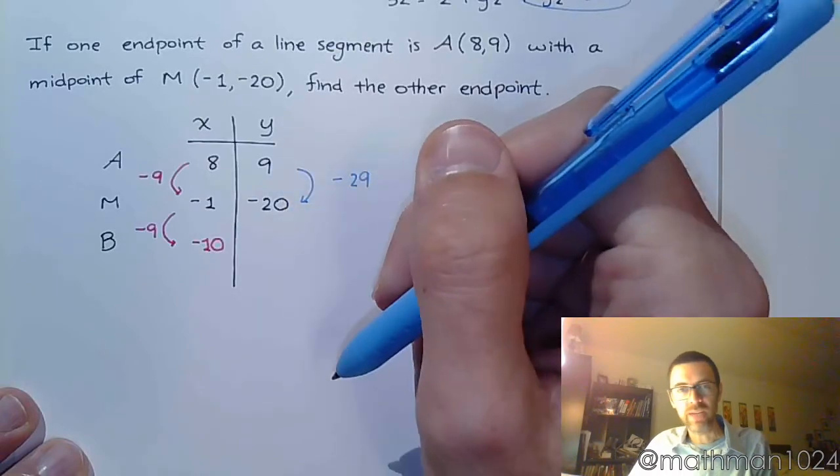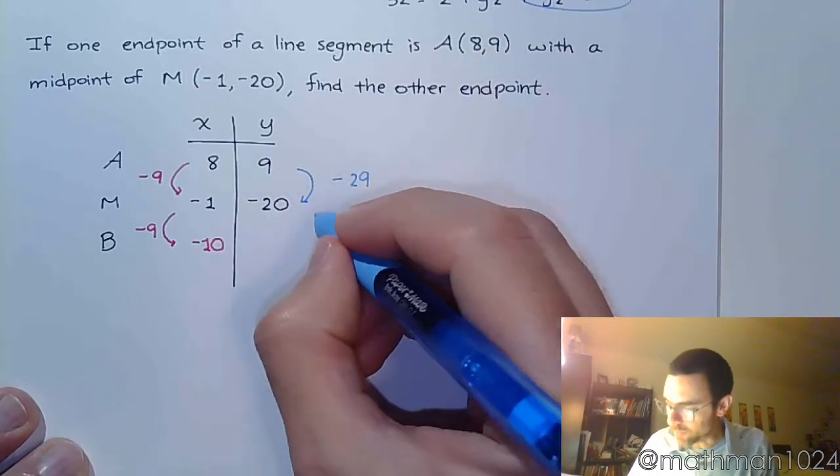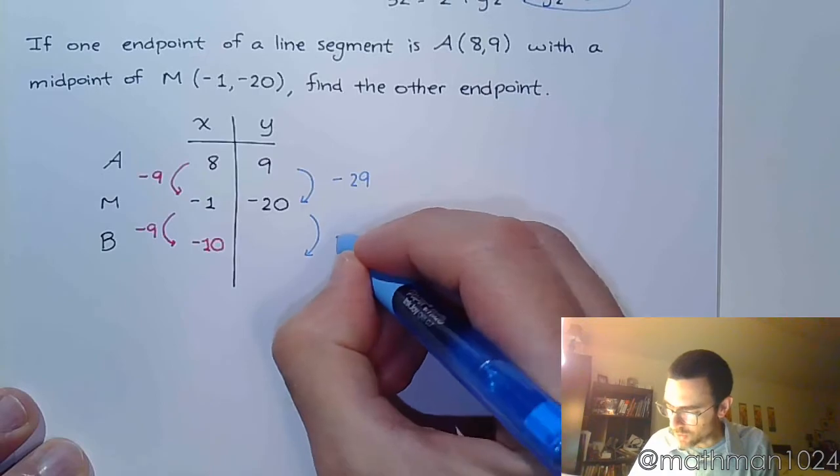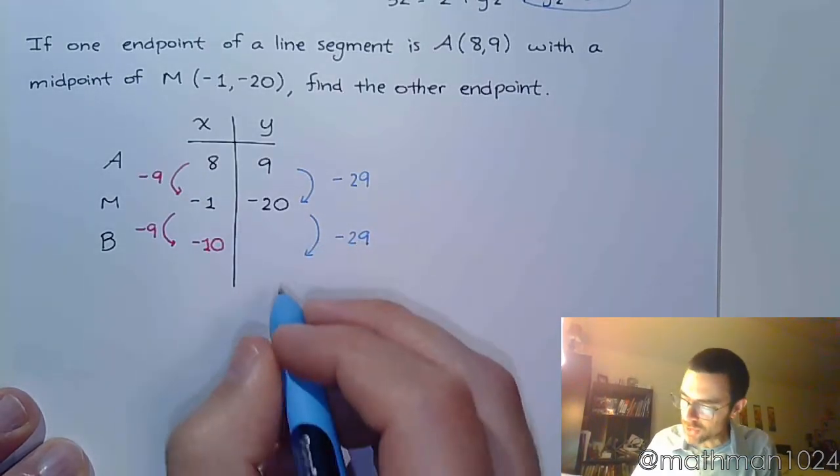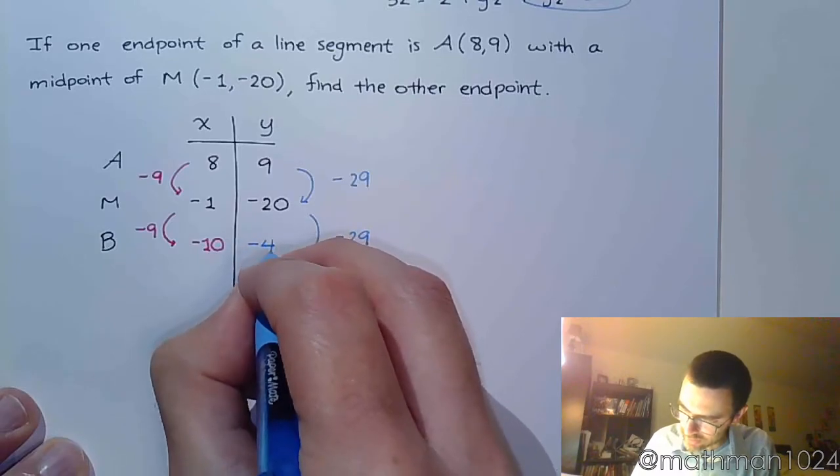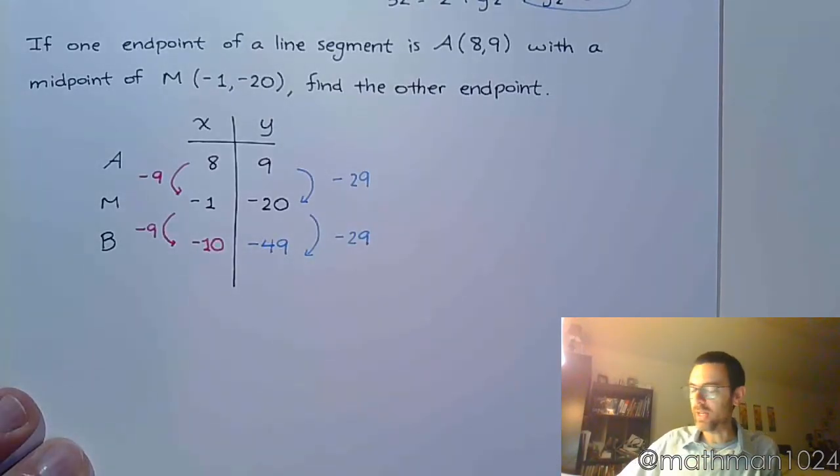Down from the 9 and then going to the negative side 20, so down 29. That's halfway, so go down 29 again. Negative 20 minus 29 is negative 49.